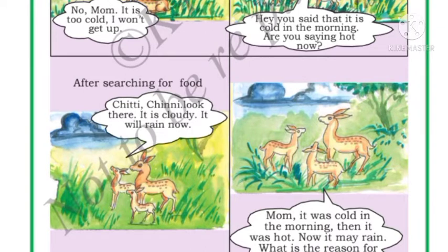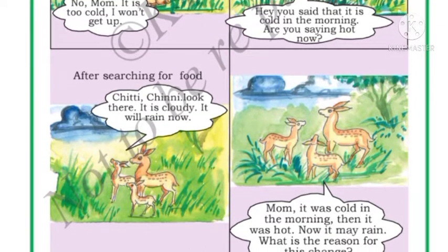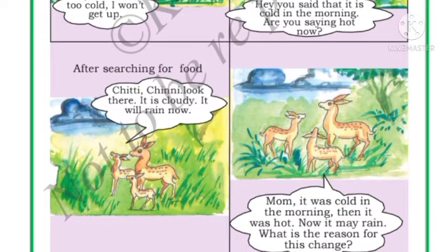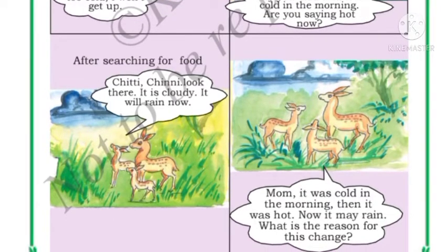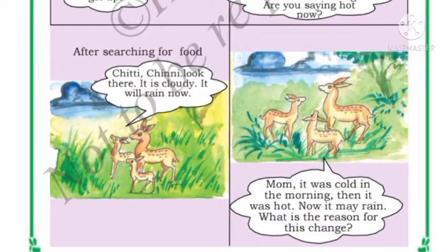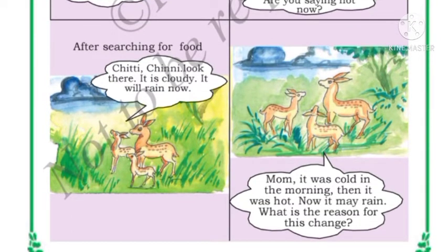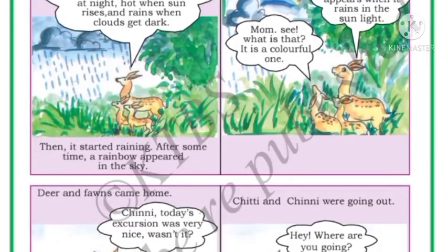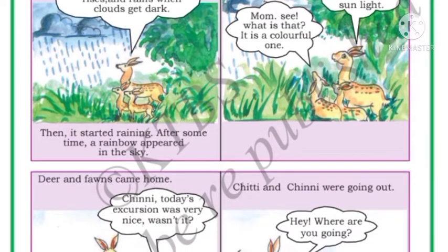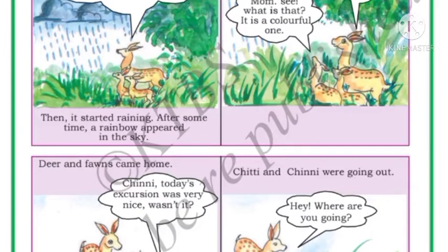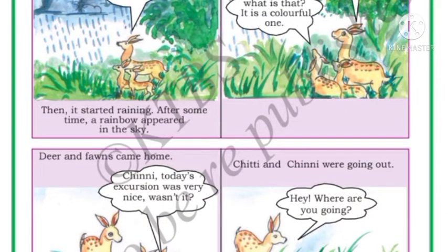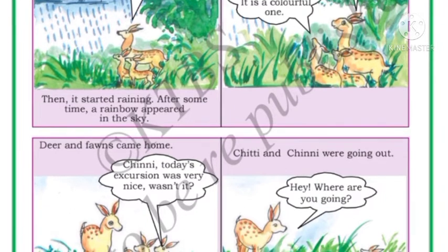After searching for food, Chitti and Chinni said, 'Mama, look there — it is cloudy, it will rain now!' The baby deer asked, 'Mom, it was cold in the morning, then it was hot, and now it may rain. What is the reason for this change?' Mom deer explained: 'Yes children, cold, hot, cloudy, windy, and rainy are the changes in the atmosphere in a day. This is called weather.'